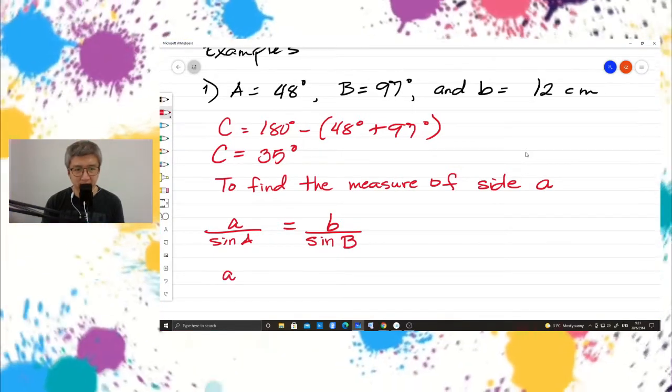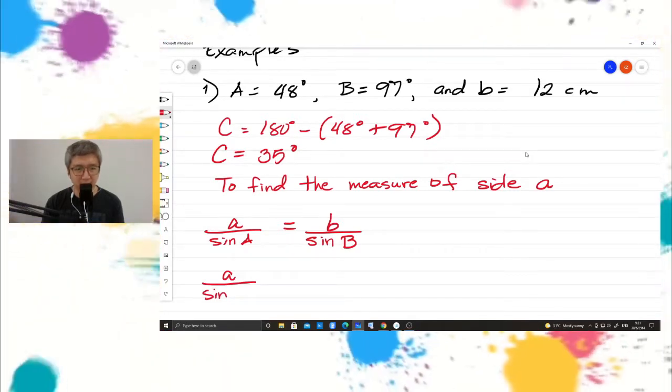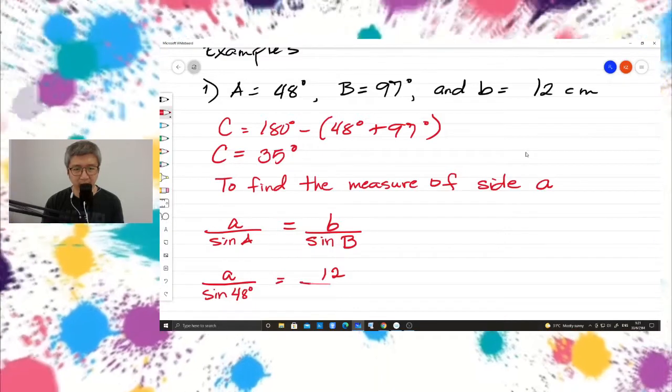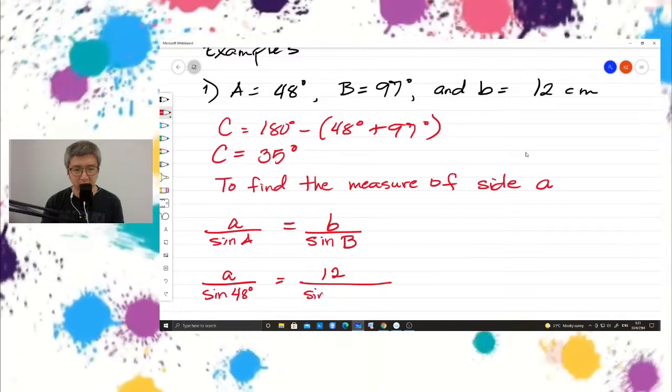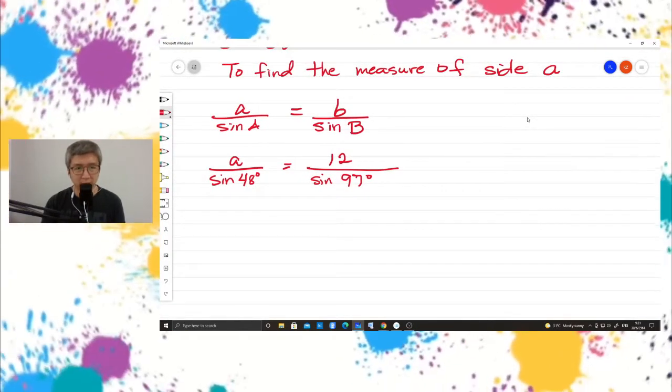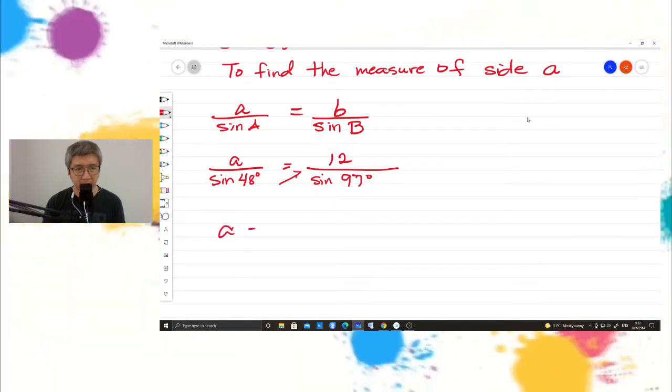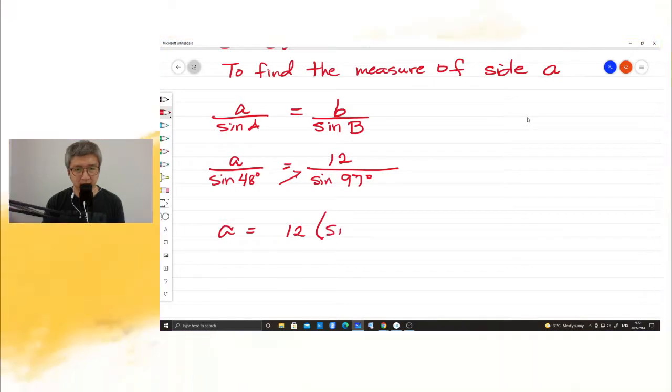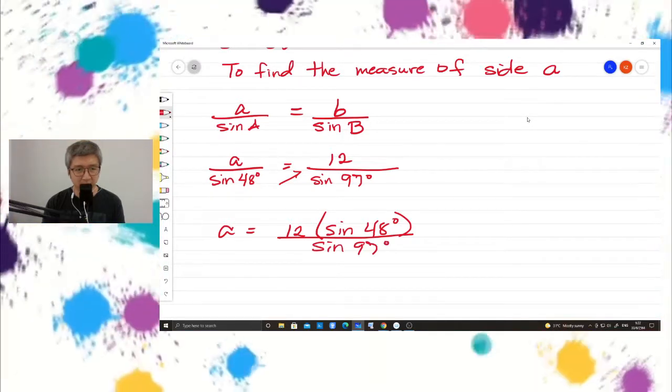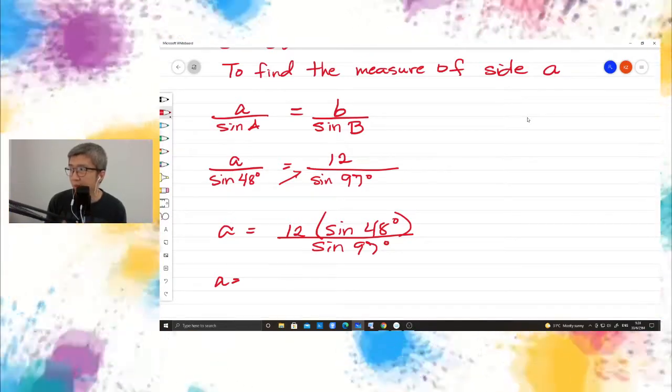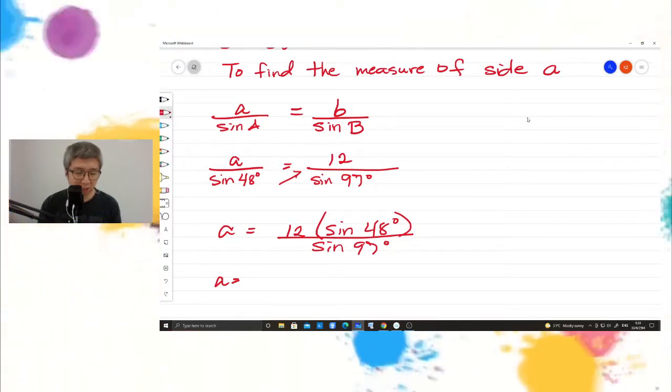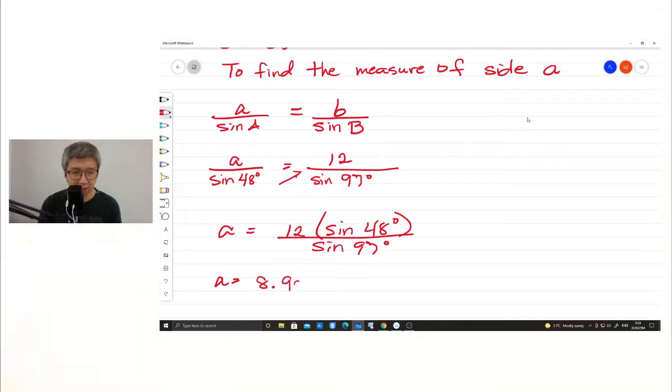So to find side A, we have angle A is 48, B is 12, and angle B is 97. Then cross multiplication. So side A is equal to 12 times sine 48 degrees all over sine 97 degrees. 8.98, so we have 8.98 centimeter.